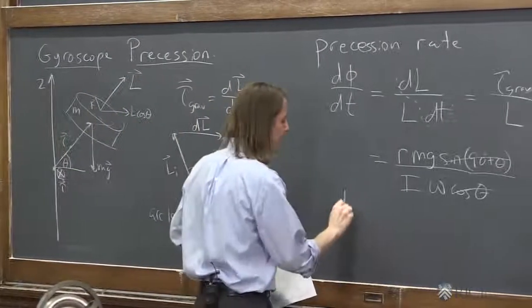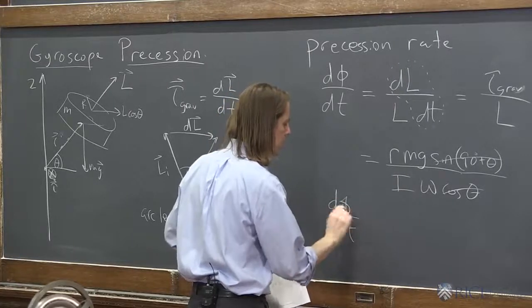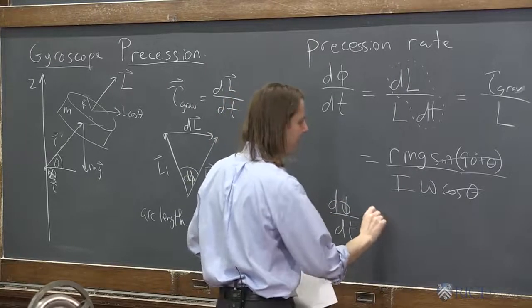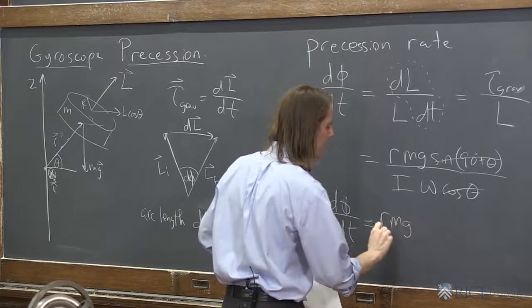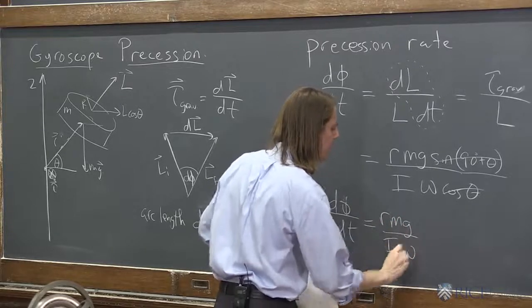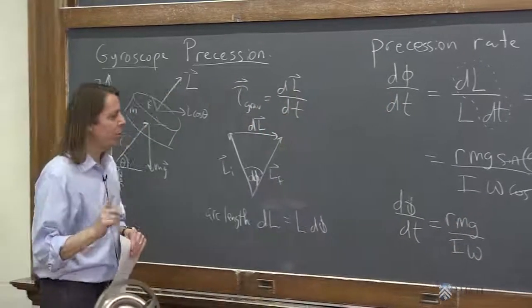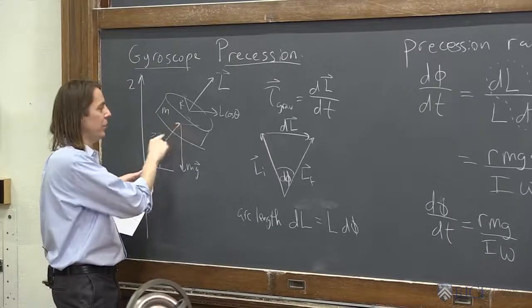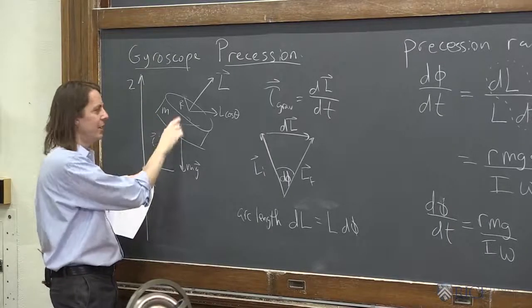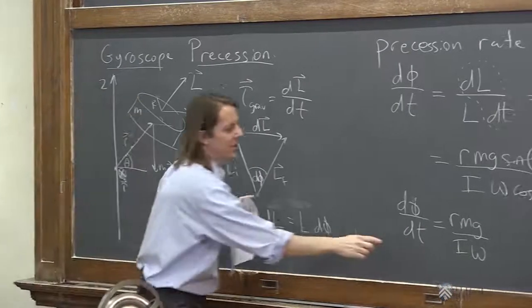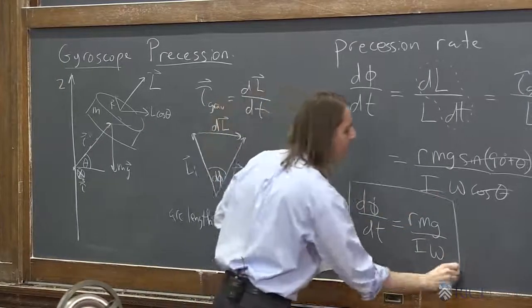So then the precession rate that we care about, d phi dt, the thing we're trying to think, how fast does it go around? r mg over I omega. Keep in mind, r here is how long this rod is, or how long this distance is. It's not the radius of the disk. The radius of the disk is hiding inside of that moment.